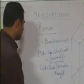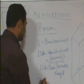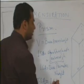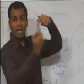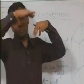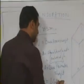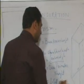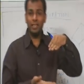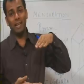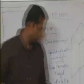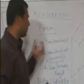The last thing is the total surface area, which is simply lateral surface area plus twice of base area — because there are two bases, one at the bottom and one at the top. This base can be anything: it can be rectangular, triangular, hexagonal, decagonal, or anything. So this is the prism.